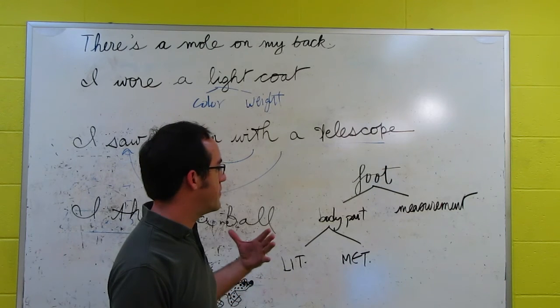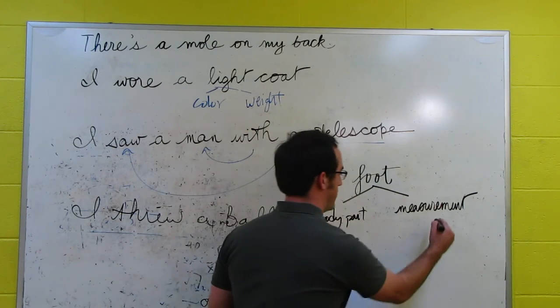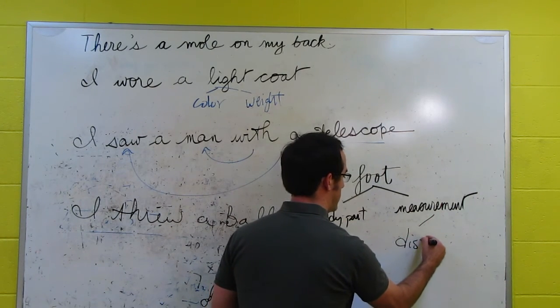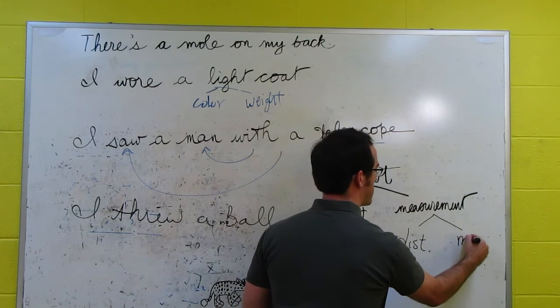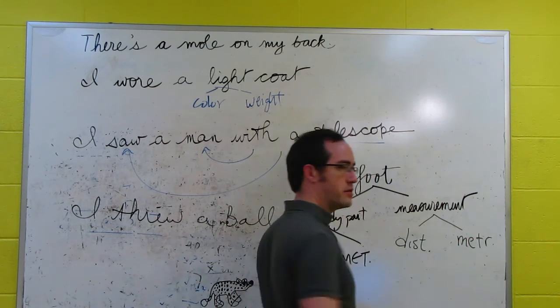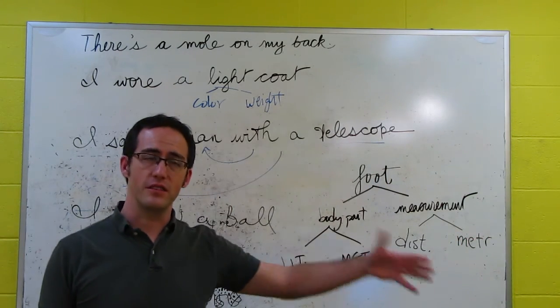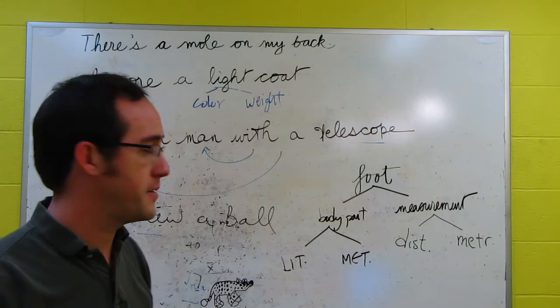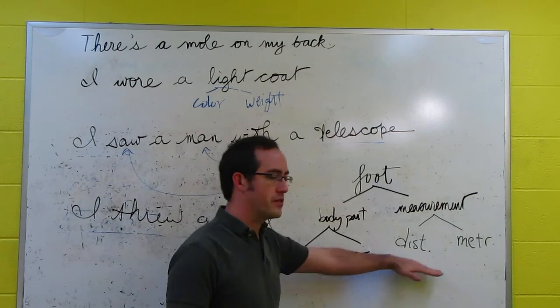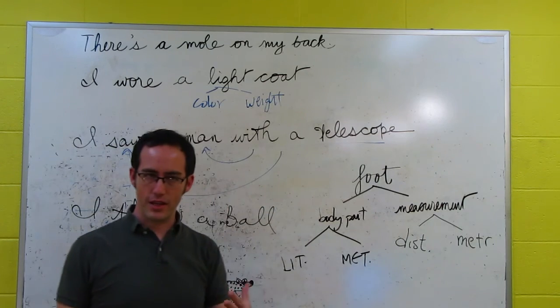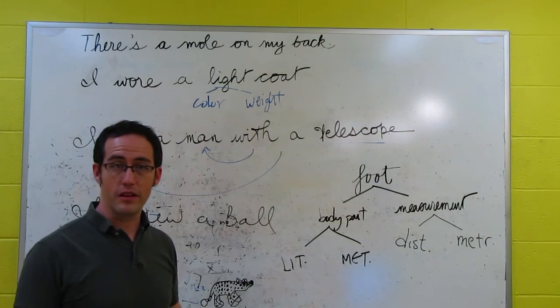And then, for measurement, you have the measurement that is of distance. And then, there's also the metrical measurement, a metrical foot, like you see in poetry or phonology. There are a lot of different meanings. And these all mean different things. And when we say they mean different things, of course, they have different truth conditions.